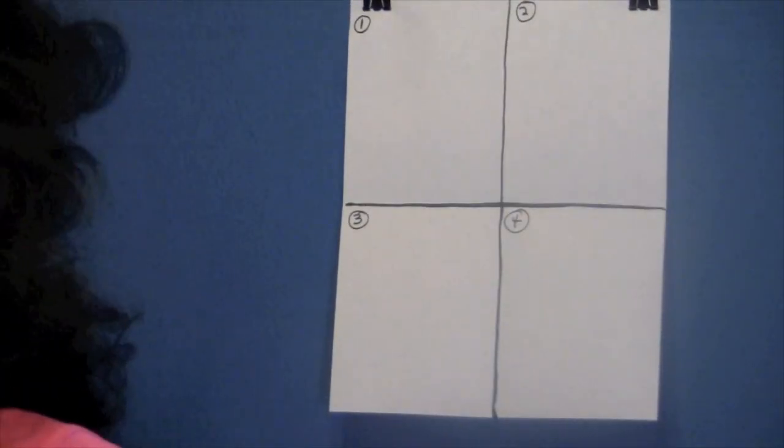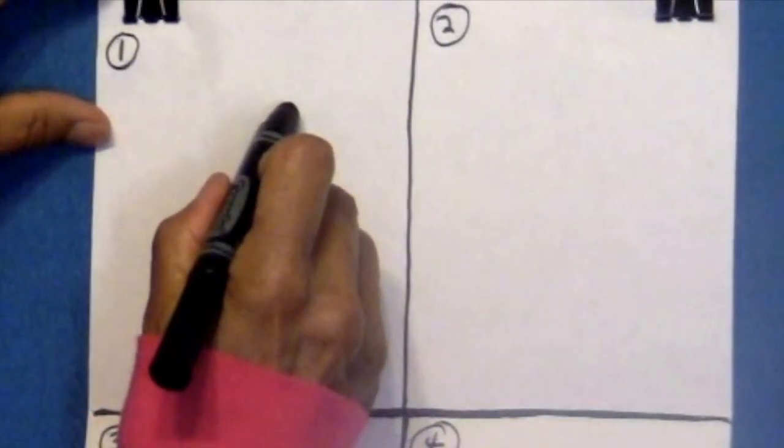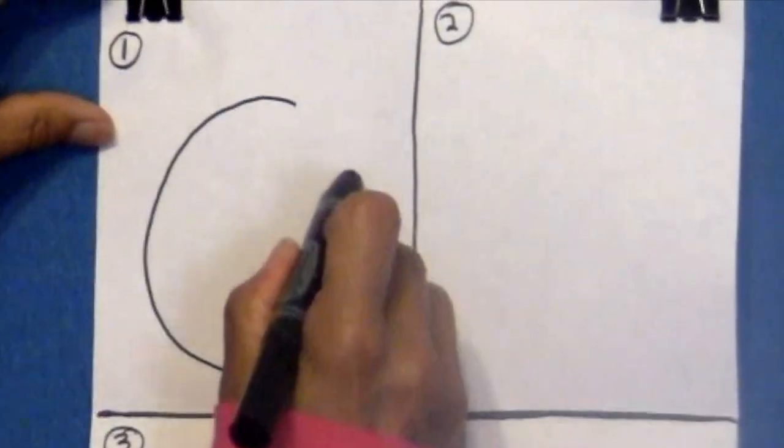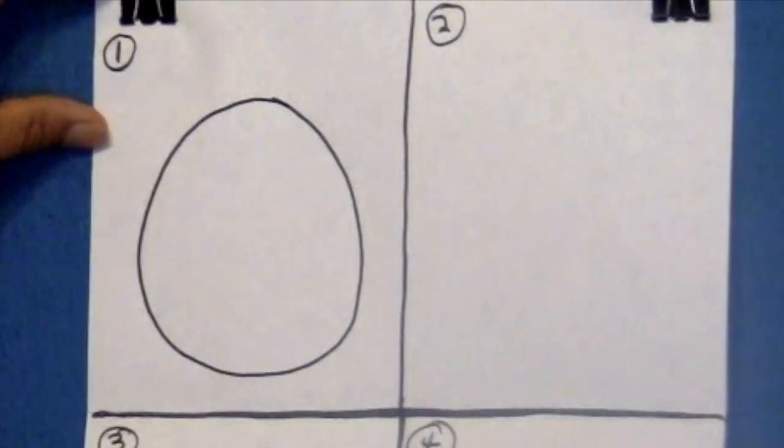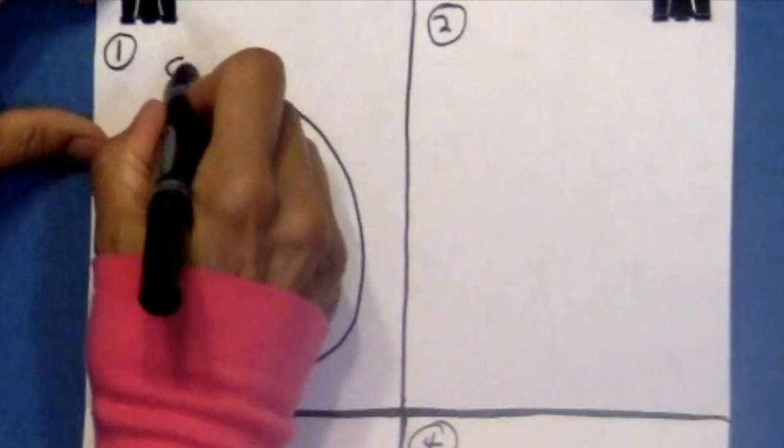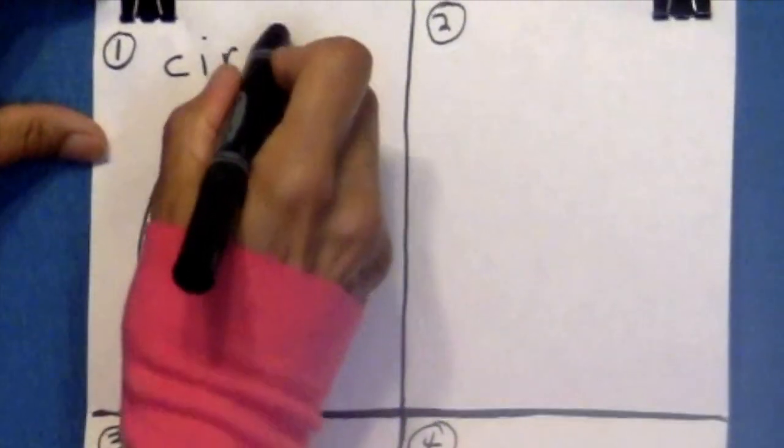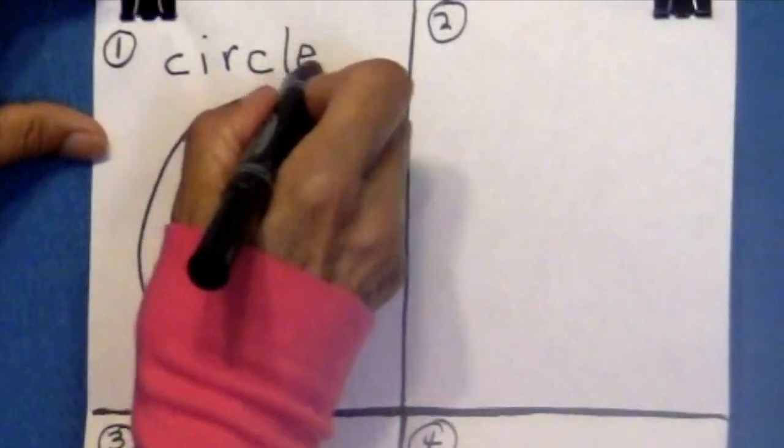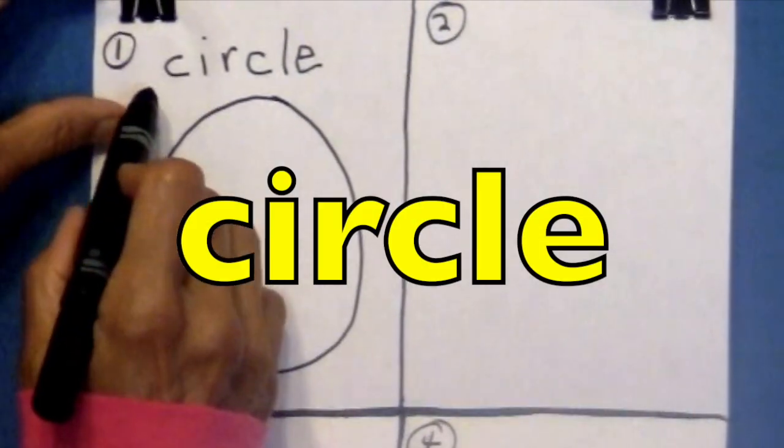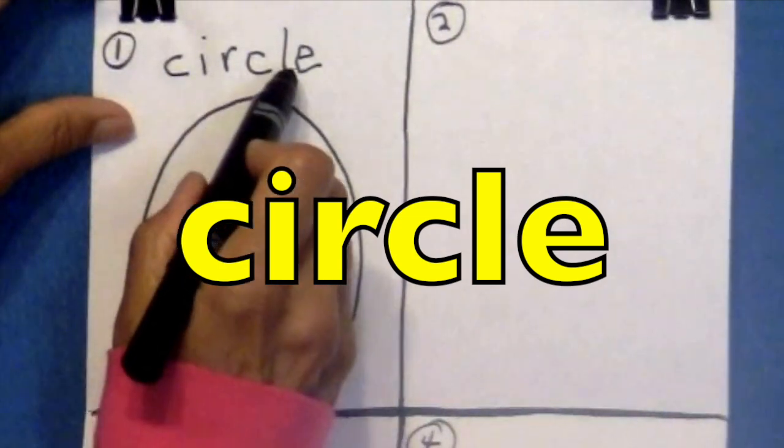Boys and girls, the first shape that we are going to review is a circle. So I want you to draw a circle in box number one. And just do the best you can, and how do we spell circle? Say it with me, please. C-I-R-C-L-E. And I want you to write that with me also. How do we pronounce circle? Circle. C-I-R-C-L-E.